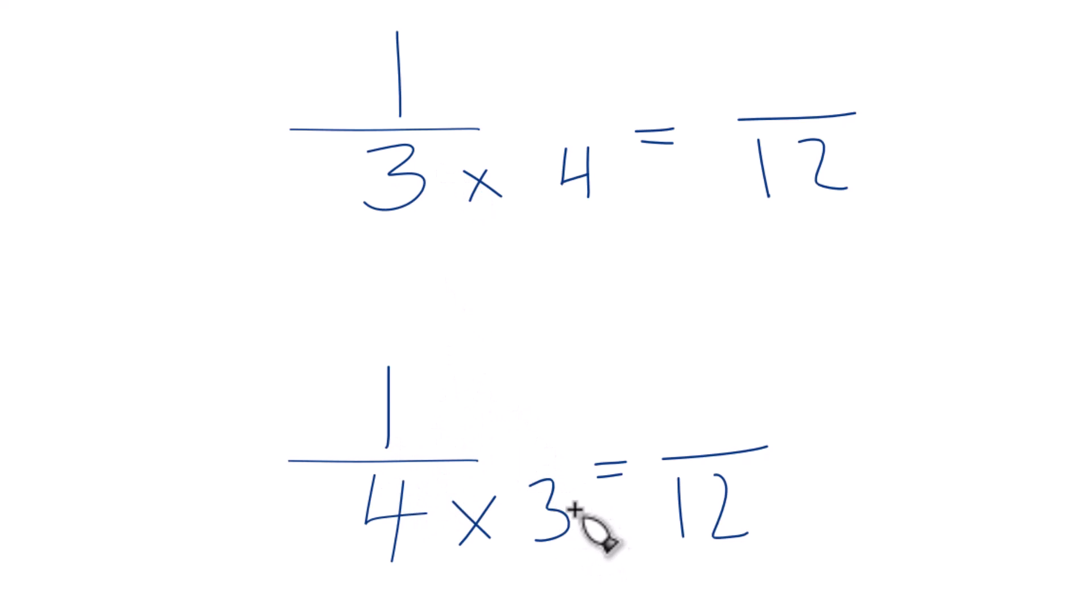But I can't just multiply the denominator. I have to multiply the numerator by the same number as well. So 1 times 3, that equals 3. And 3 over 3 is equal to 1. So we didn't really change the value, just the way it's represented. 1 fourth and 3 twelfths, they're both equal to the same number, 0.25.